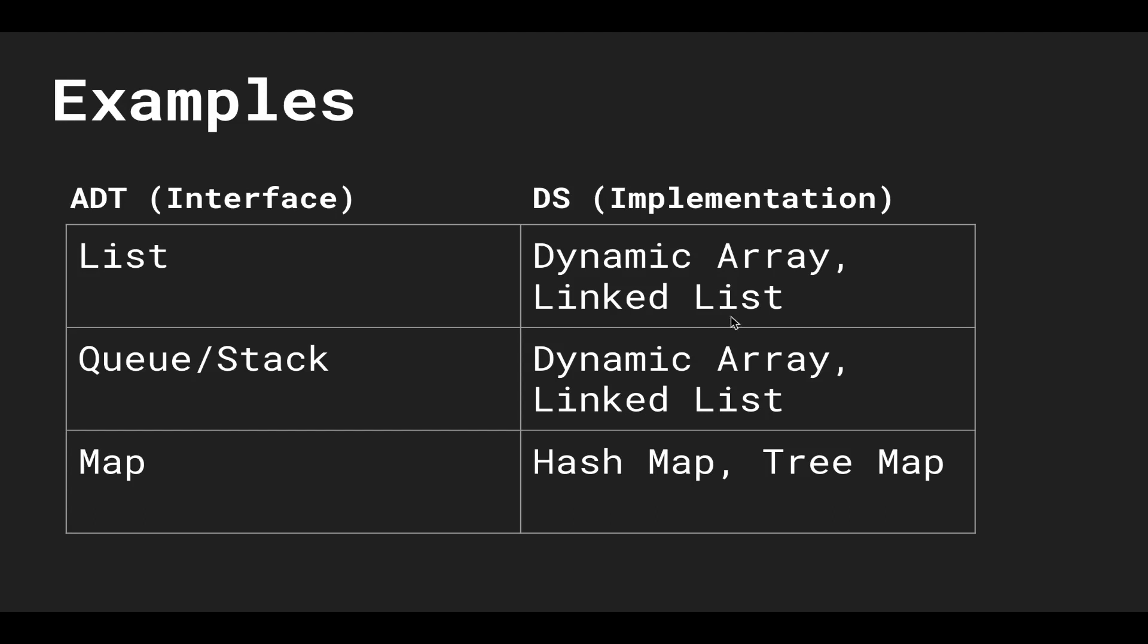So in this series, we're going to be going over data structures. And these are the implementations for the actual abstract data types. The abstract data types are interfaces. They define the contract and protocol of what users of these data types should need. And the data structures are the actual implementation.